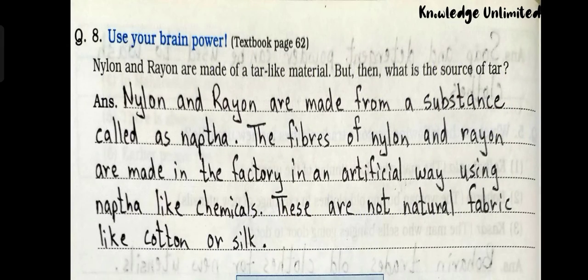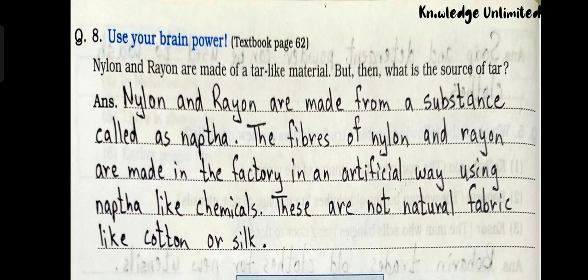Let's see the next question, question number eight: use your brain power — nylon and rayon are made of a tar-like material, but what is the source of tar? Answer: nylon and rayon are made from a substance called naphtha. The fibers of nylon and rayon are made in the factory in an artificial way using naphtha-like chemicals. These are not natural fabrics like cotton or silk.